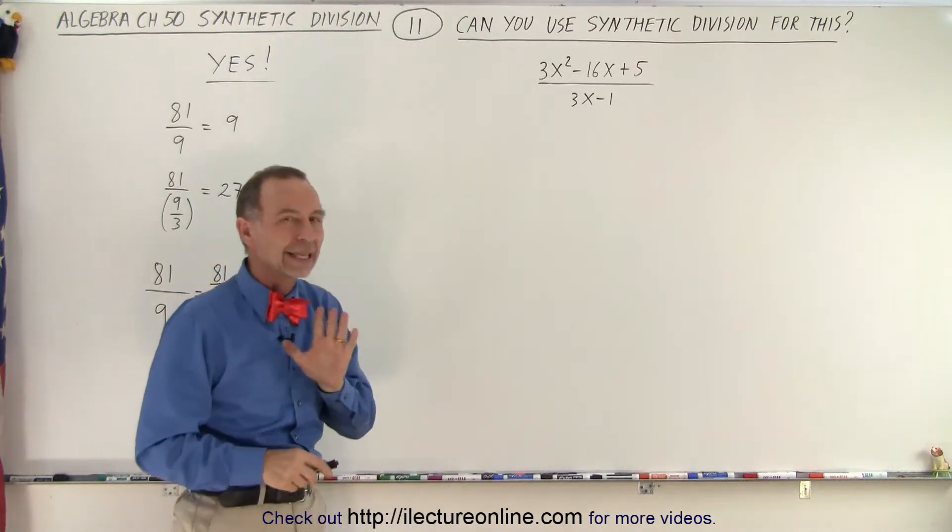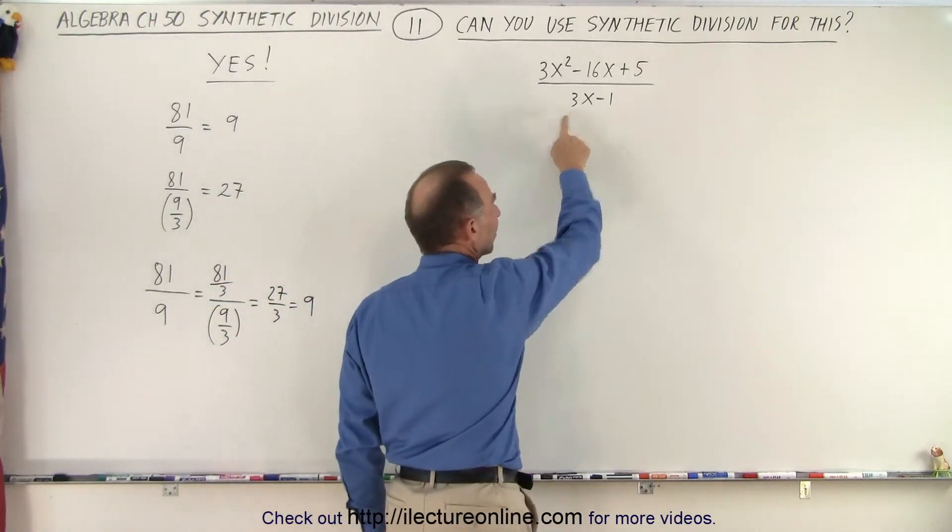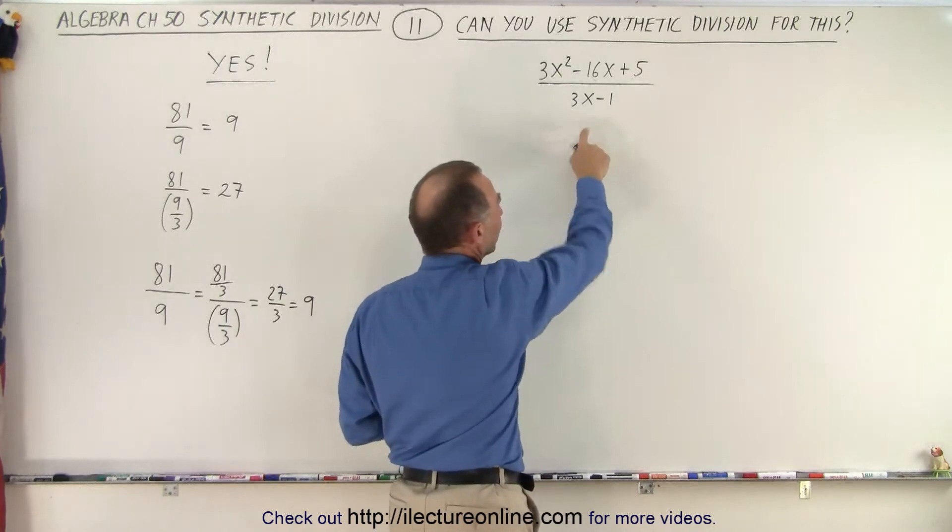But we need to be a little bit careful. First of all, we do want an x in the front, not a 3x in the denominator. So what we can do is we can divide the denominator by 3.